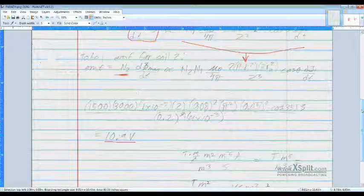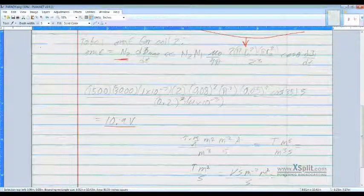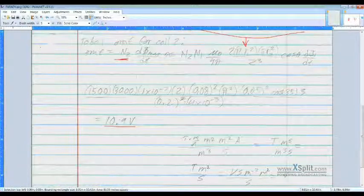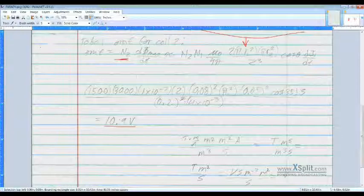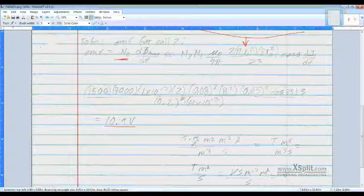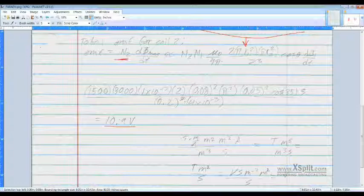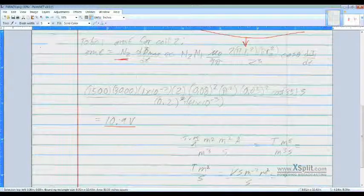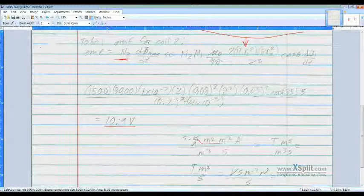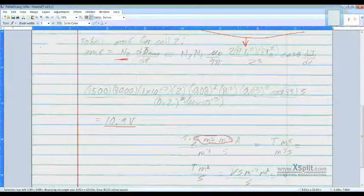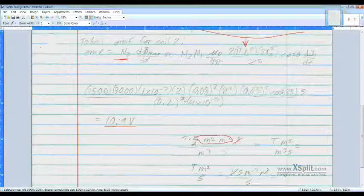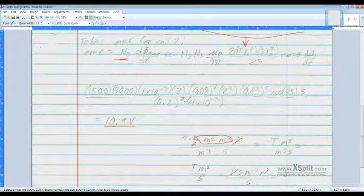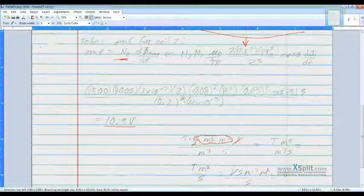Now, it'd probably be a good idea to check the units, since that's a lot of terms there. So we have Tesla times meters over amps. We have meters squared, meters squared, and we have amps over meters cubed and seconds. So we can combine like terms, and we can cancel out those amps.